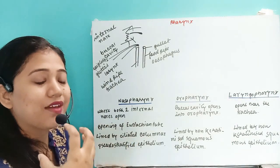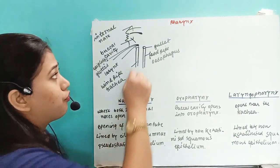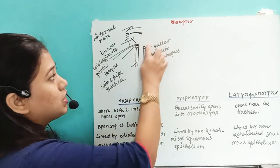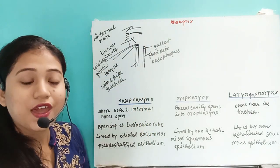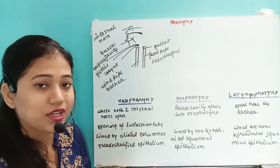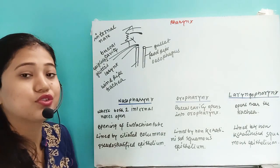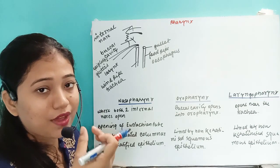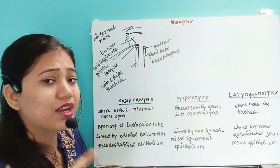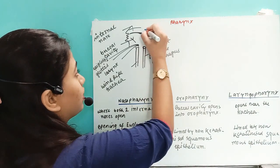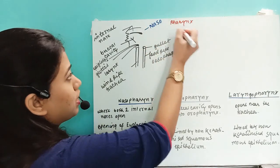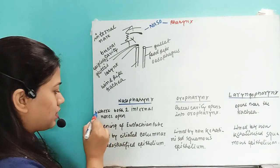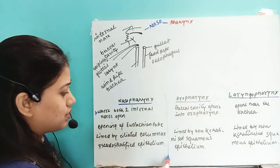The region from where the buccal cavity and the internal nares open, up to where air and food enter the windpipe and foodpipe respectively, is known as the pharynx. The pharynx is divided into three parts. The first part is the nasopharynx, where both the two internal nares open.